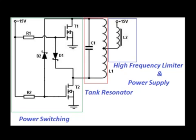The power switching, the tank resonator, and the power supply and high frequency limiter. The power switching subsystem controls the flow from the power supply to the tank resonator circuit by alternating the path to ground.